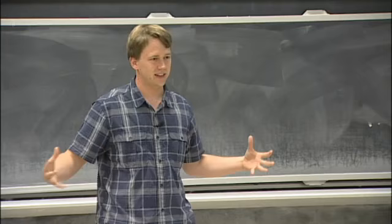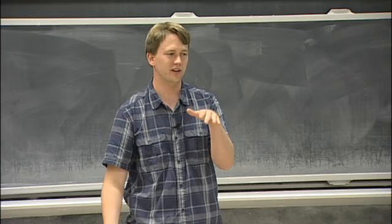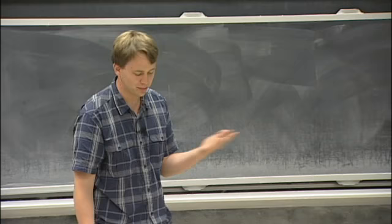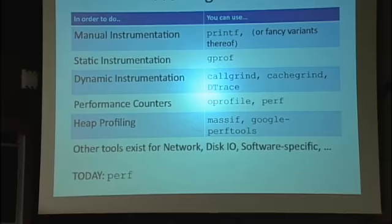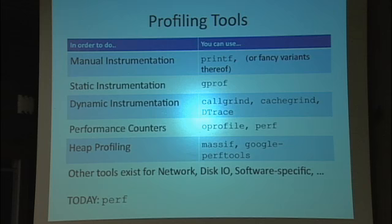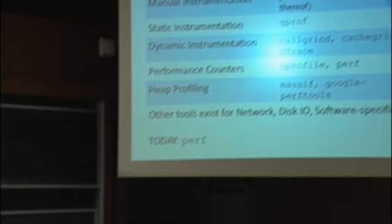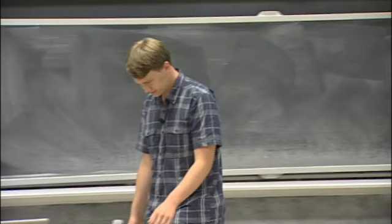That brings us to dynamic instrumentation, which solves that problem. Basically what happens is you take the binary as it is at runtime, just before you're about to run it. Before you start executing, you actually take a look at the code and translate it. You go in and insert the instrumentation and then you have this new snippet of code that you run instead. That works for binary blobs and doesn't require recompile, which is great, but it introduces a lot of overhead because you're not running the original code. You're running this translated thing, which might be much more inefficient. Valgrind has a couple of tools like Callgrind and Cachegrind.